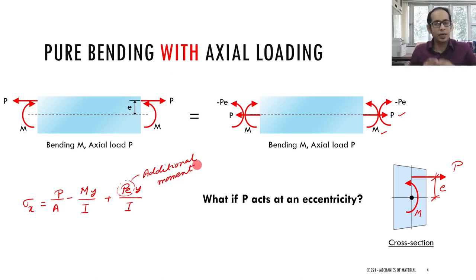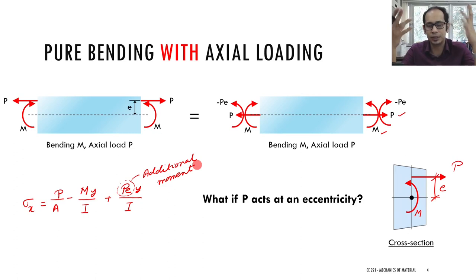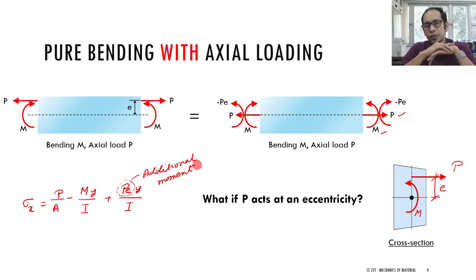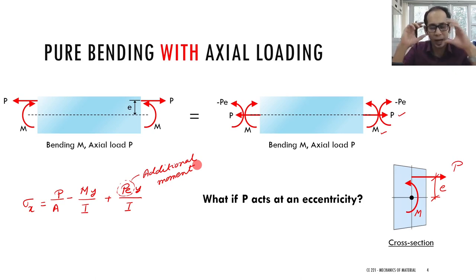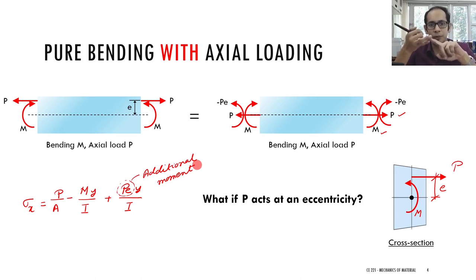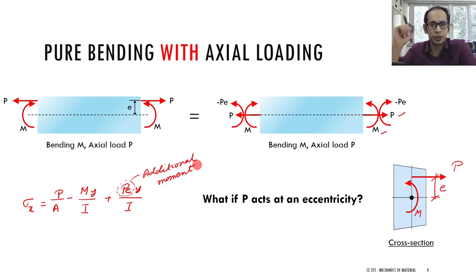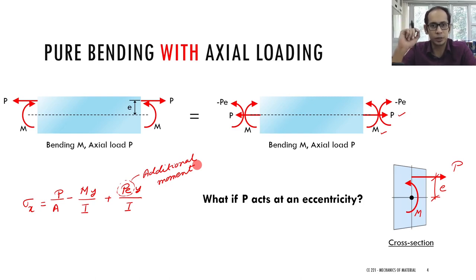Once you understand axial loading by itself and bending by itself, it is a piece of cake to put the two together and analyze systems subjected to the combined action of bending and axial load. Do not be bogged down by signs — have a logical interpretation: compression is typically negative, tension is typically positive. Find the individual stresses and then decide the sign. We will look at one example problem that specifically deals with this and reinforces these ideas.